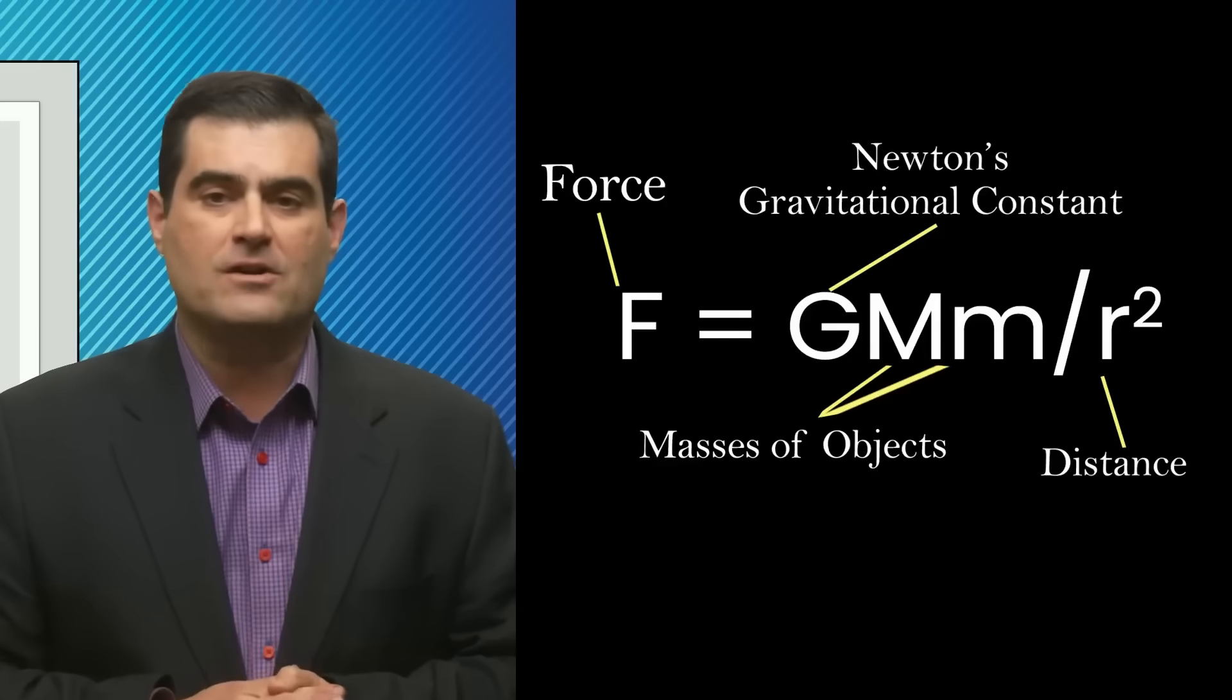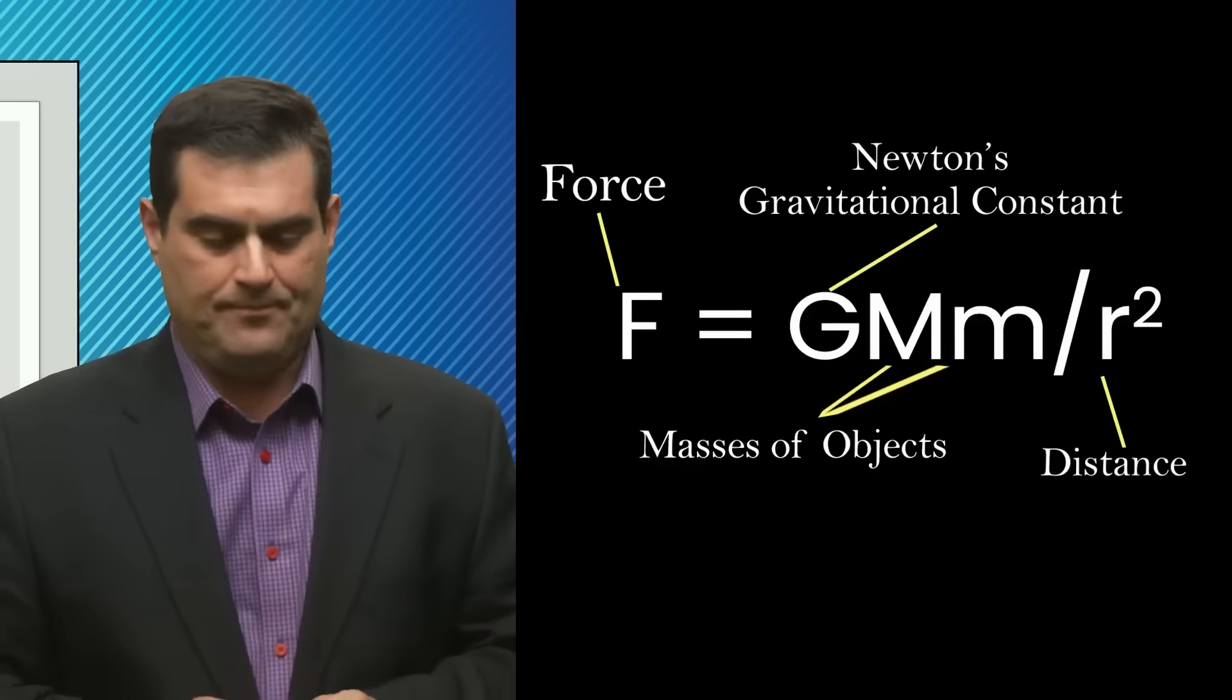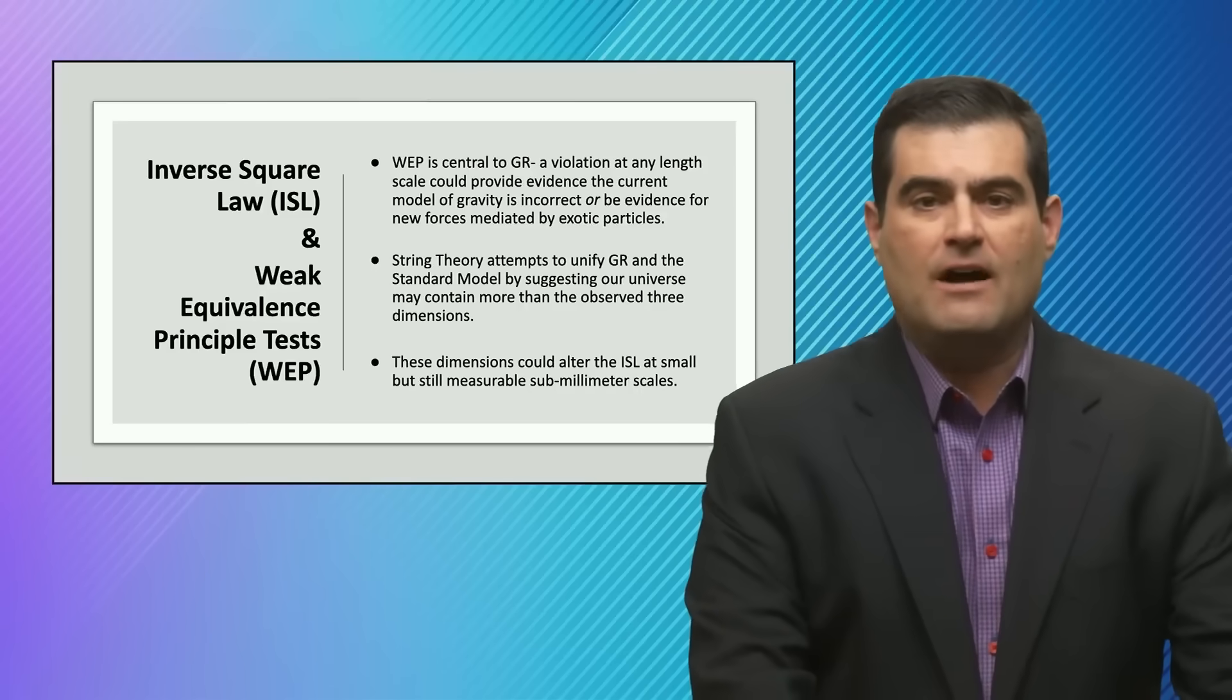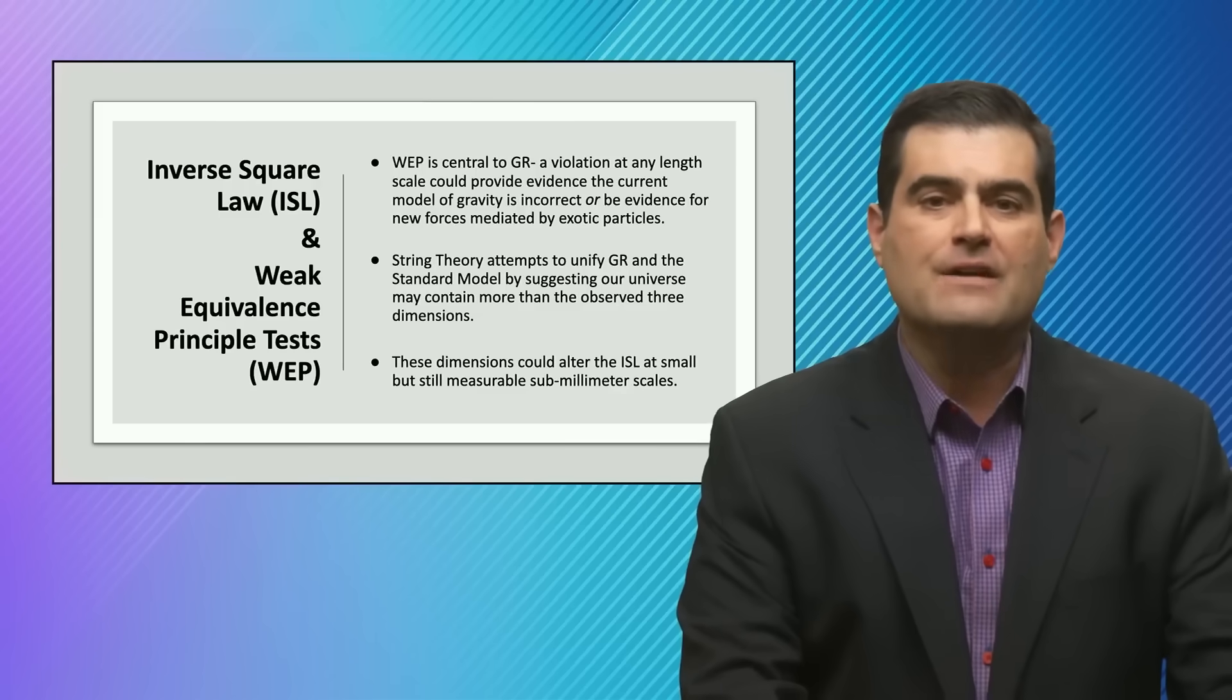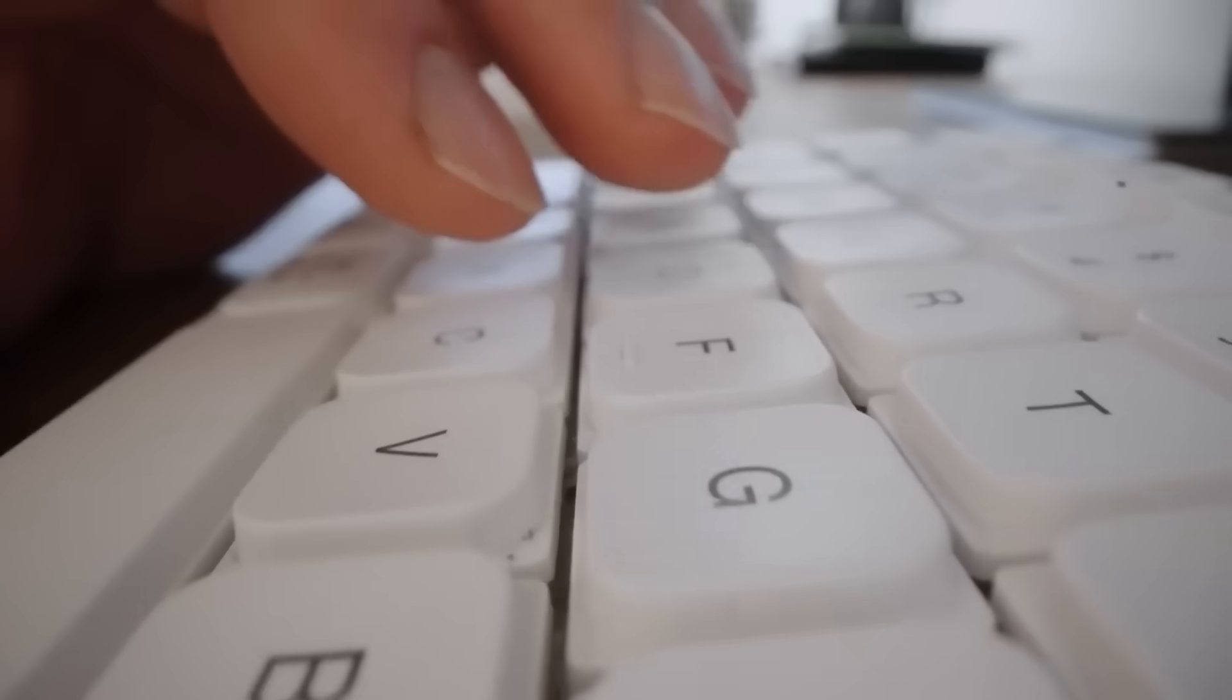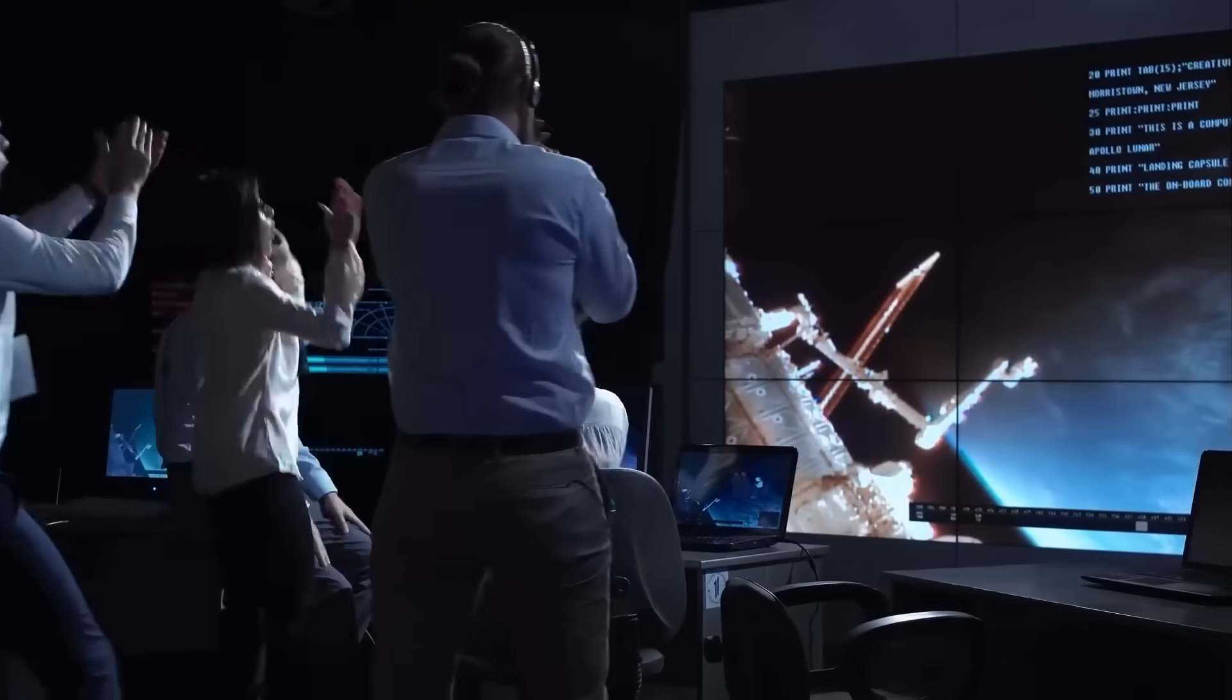and the inverse of the square of the distance between them. There could be alterations of this inverse square law at small scales that have so far evaded our detection because it's so difficult to measure the effects of gravity